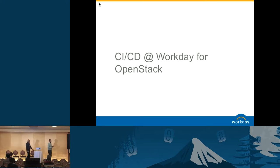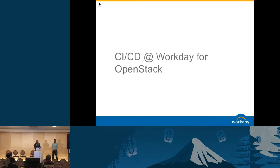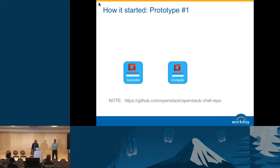Thanks, Edgar. So how it all started — our goal was to deploy OpenStack with community cookbooks and community resources. We wanted to leverage what's already available from the community. At Workday we use Chef as our configuration management tool. The first deployment we started with the community cookbooks — the OpenStack Chef project on GitHub. We started with that and soon realized the project had a very simple implementation. We could bring up an OpenStack cluster with one controller and compute node using two Vagrant boxes and evaluate it on our laptop.